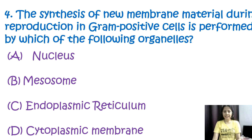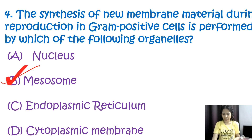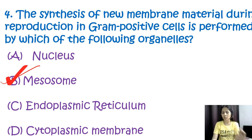Question number four: the synthesis of new membrane during reproduction in gram positive cells is performed by which of the following organelles? Options are nucleus, mesosomes, endoplasmic reticulum, or cytoplasmic membrane. The correct option is B, mesosomes. These mesosomes are invaginations of the cytoplasmic membrane found in some gram positive cells, and they are involved in various cellular processes including synthesis of new membrane material during cell division.